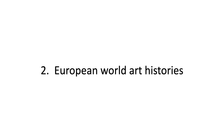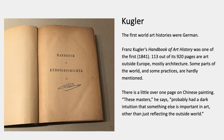A bit about European world art histories — I'm just going to give some examples. They're not books I'm recommending you go and read, but they are important to know about because they are the prehistory of what we do. The first world art histories were German. Franz Kugler's Handbook of Art History, published in 1841, was the first, or one of the first. Only 113 of its 920 pages are about art outside of Europe, and that's mostly architecture.